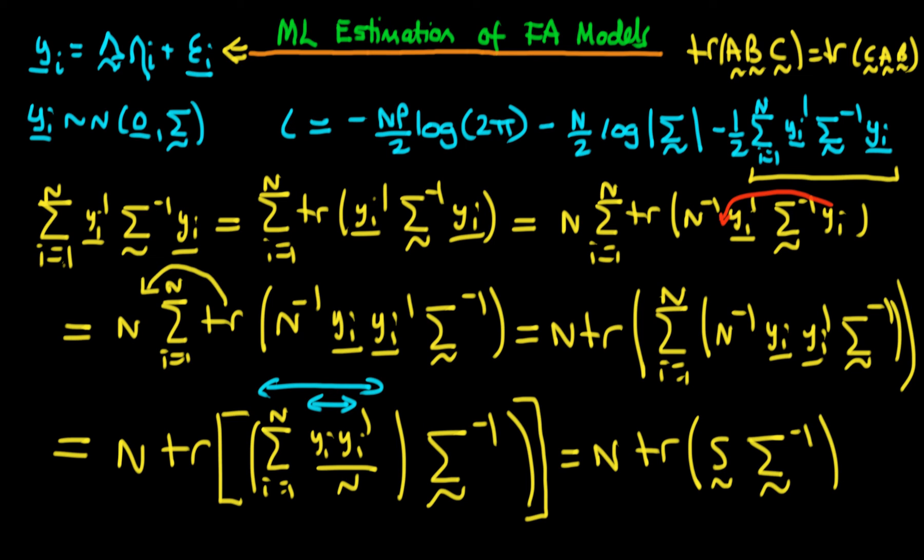It's important to stress that S here is a consistent estimator of the overall variance covariance matrix sigma. But it is a biased estimate of the variance covariance matrix. It comes back to Bessel's correction. We would need to divide it through by n minus 1 rather than n.